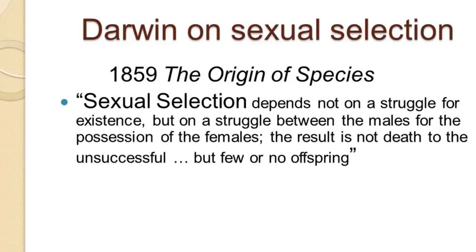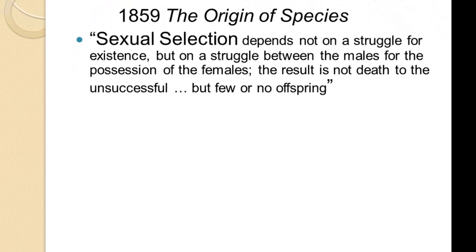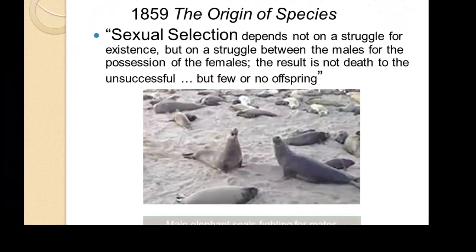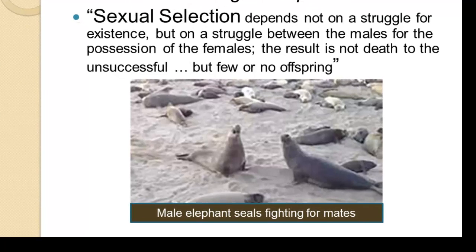Darwin argued this would probably be a less vigorous kind of selection. In his thinking, there was a clear distinction between what he called natural selection and sexual selection. Most evolutionary thinkers today simply see sexual selection as a variant kind of analysis that is part of natural selection.